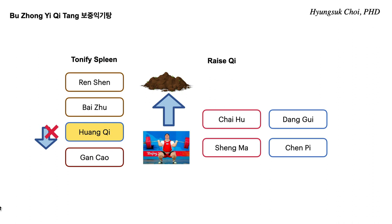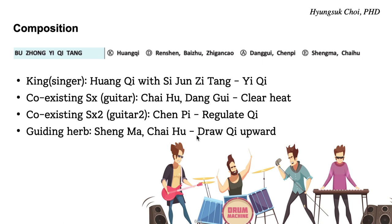To interpret this formula: for board examinations, Wang Qi is the king, Renzen, Baiju, and Ganchao are deputy, and Danggui and Chen Pi are assistant. However, I would interpret it differently — just like interpreting fine art or music. I think the king herb of Bujong Ichi Tang is Si Junji Tang with Wang Qi: Wang Qi is the king herb together with Si Junji Tang, it tonifies qi. In this large formula, Si Junji Tang is just the king delivering the main melody.